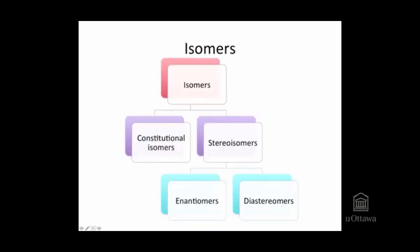In summary: isomers have the same molecular formula but are different molecules. There are two classes of isomers — constitutional isomers, which have their atoms connected differently, and stereoisomers, which have the same connectivity of their atoms but differ in the arrangement of their atoms in space. Enantiomers are non-superimposable mirror images, and diastereomers are stereoisomers that are not enantiomers.